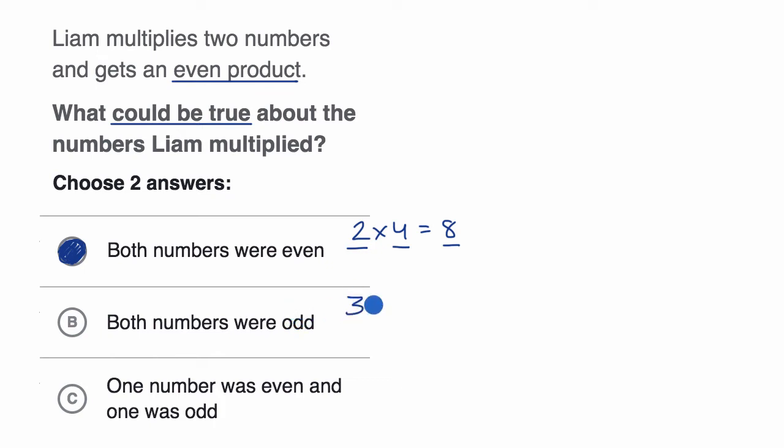If you multiply three times five, that's equal to 15. Odd times odd is equal to an odd number. If you multiply seven times nine, you get 63. Once again, odd times odd is equal to odd. So there's no way that you can multiply two odd numbers and get an even product. So we would rule this out.